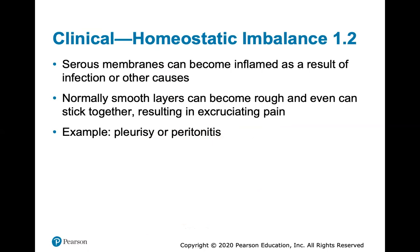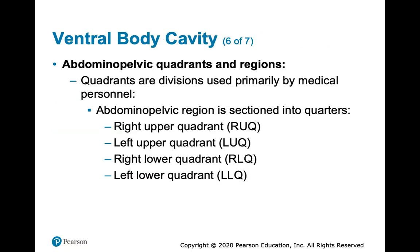These serous membranes can become inflamed, usually as a result of a bacterial infection or other cause. Normally the smooth layers can become rough and even stick together, resulting in excruciating pain. This is called pleurisy when it affects the membranes surrounding the lungs, or peritonitis. The suffix -itis always means inflammation — you'll see other diagnostic words with -itis and it always means inflammation of something. If there isn't enough fluid or there's an infection, the smooth layers become rough and cause pain.